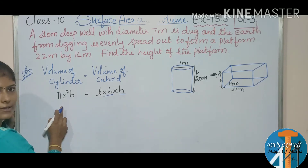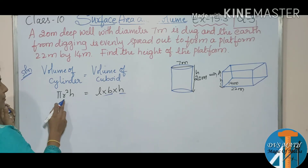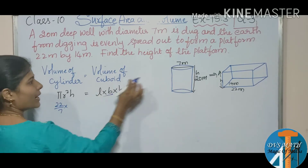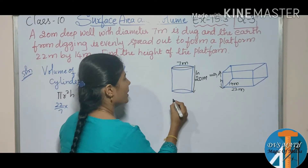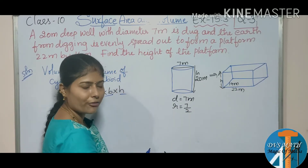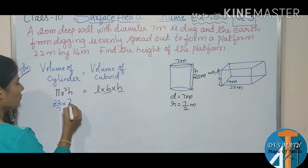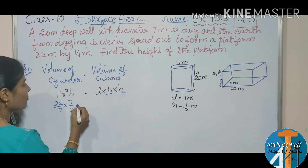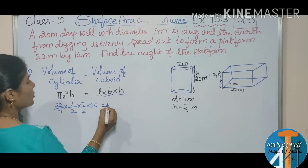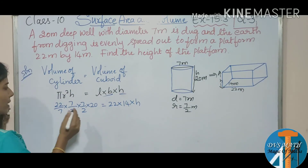Substituting the values: π is 22/7, diameter is 7 meters so radius is 7/2 meters. Taking 7/2 so we can cancel easily with the π value. So: 22/7 × (7/2) × (7/2) × 20 = 22 × 14 × h.